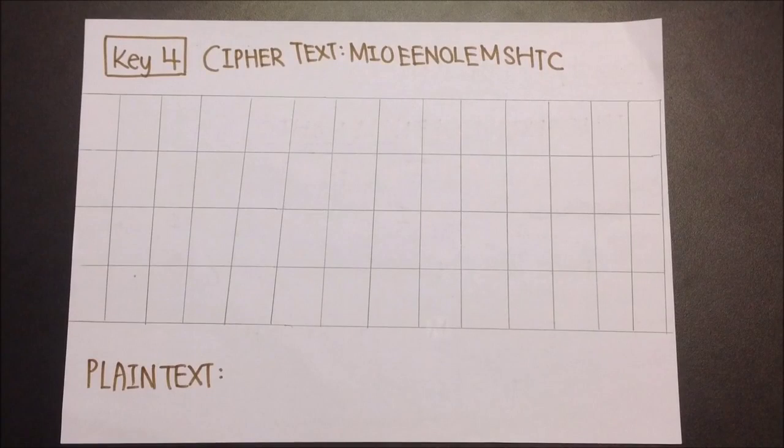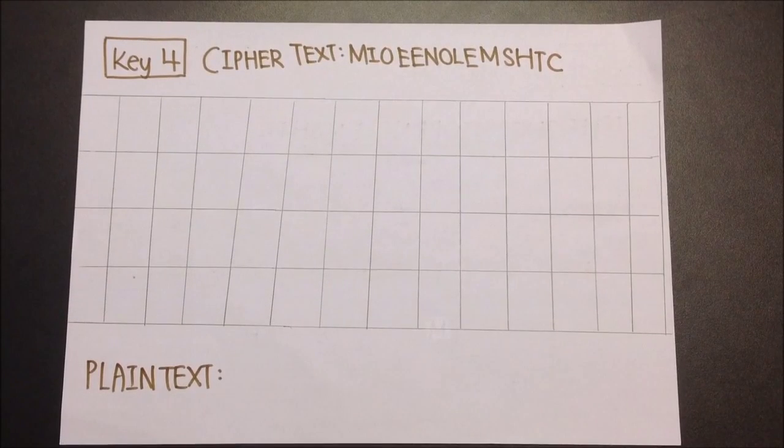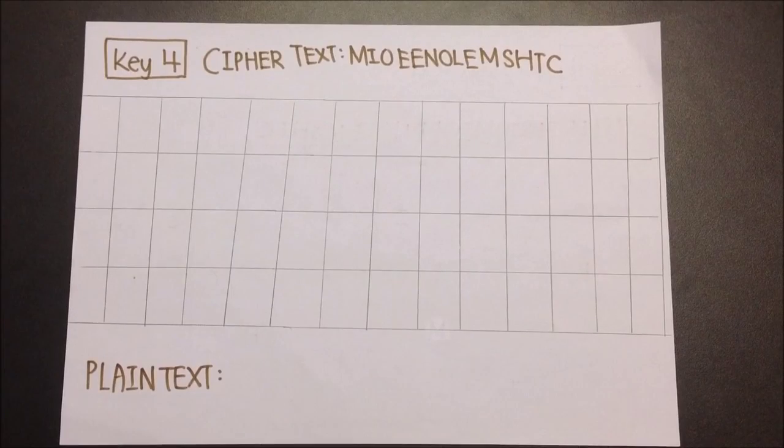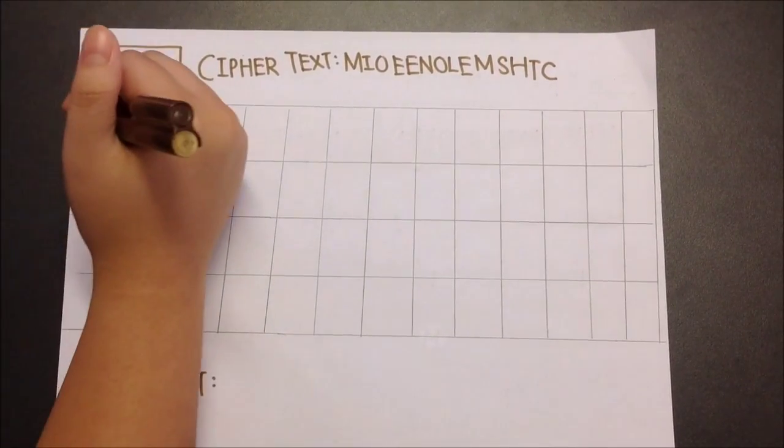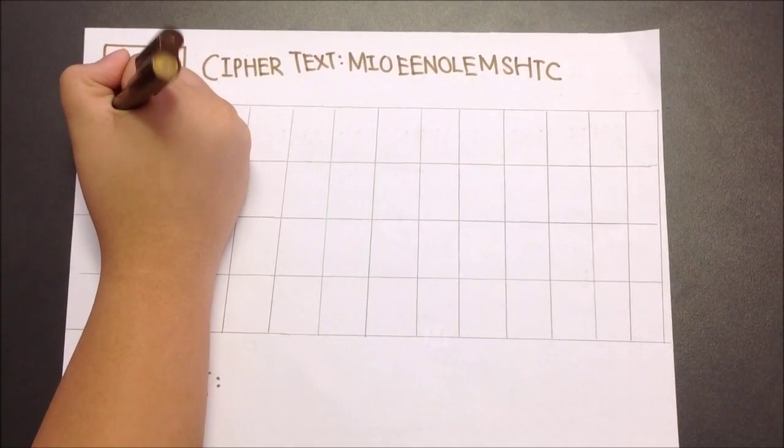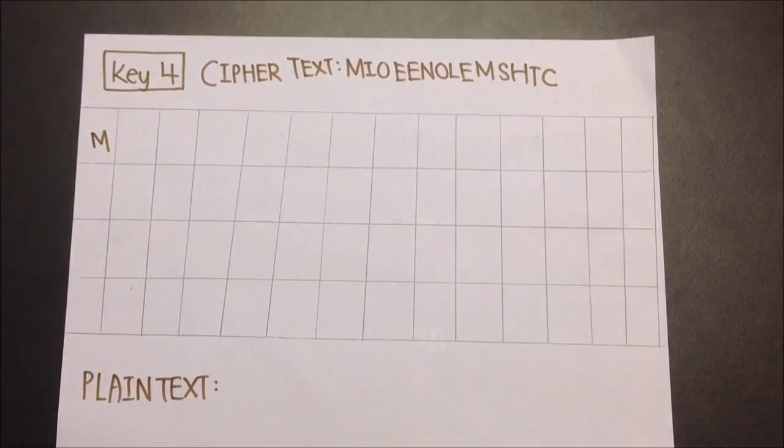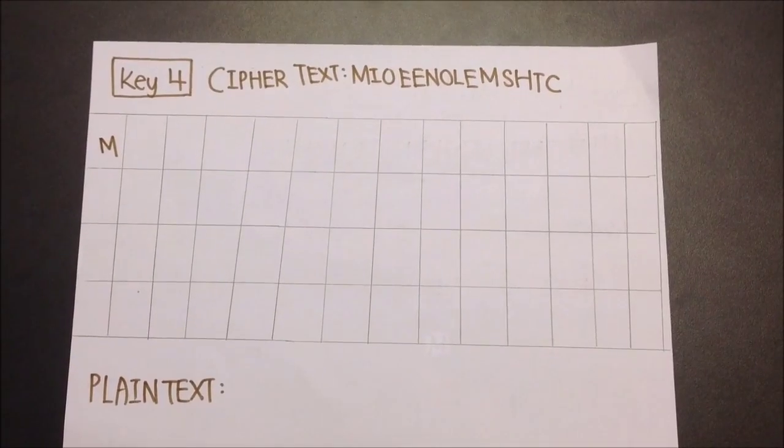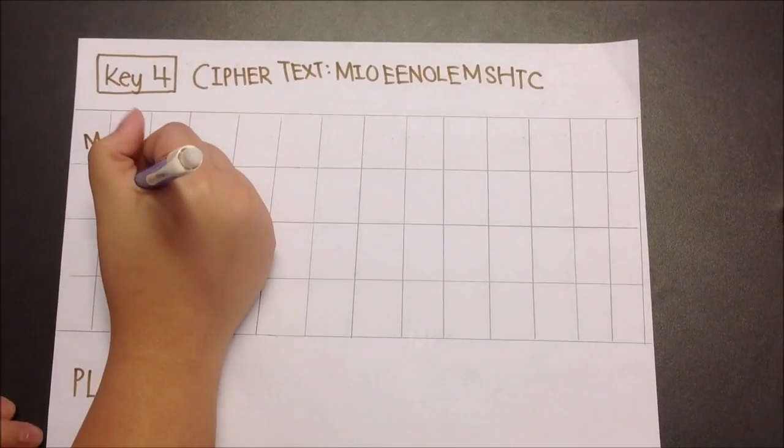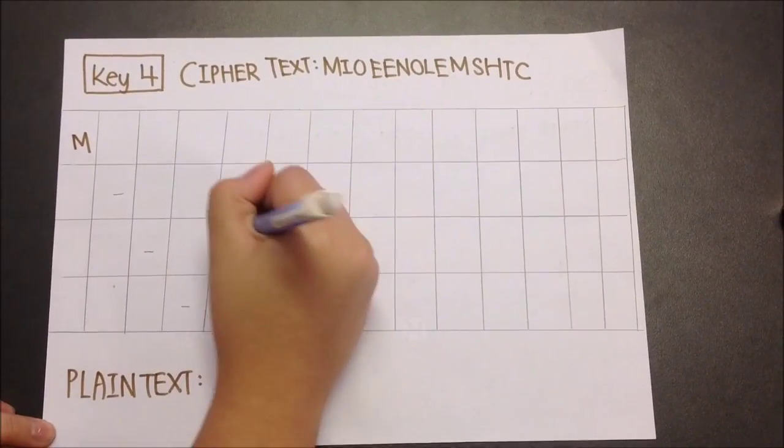In this case, the key is 4 and there are 14 letters. Therefore, there will be 4 rows and 14 columns in the grid. To decrypt, fill the first letter of the cipher text into the top left square of the same grid created previously. Then, place dashes downwards diagonally until you reach the last row.